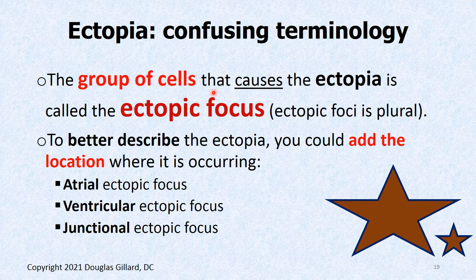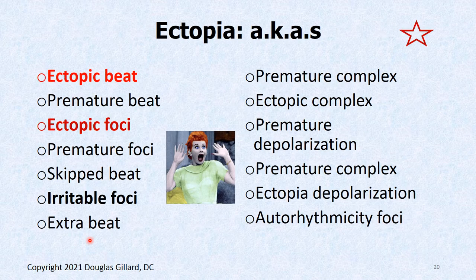You can be more specific: if the ectopic foci are in the atria, the patient has atrial ectopic foci. If in the ventricle, ventricular ectopic focus or foci. The junctional ectopic focus is another location. We need to talk about the junctional region because you may not know where it is. You know the atrial areas and the ventricles, but the junctional region needs explanation.